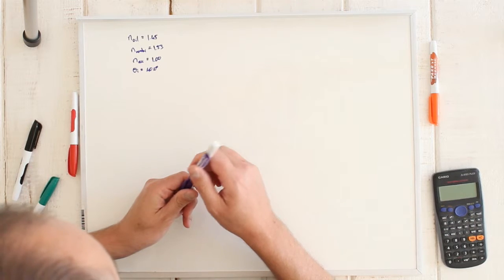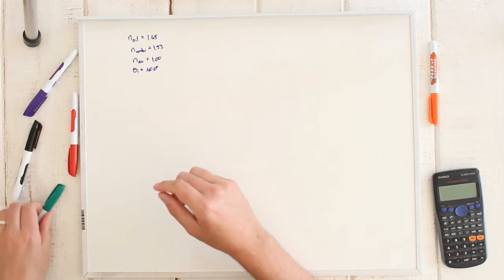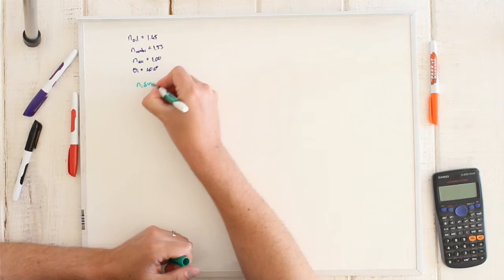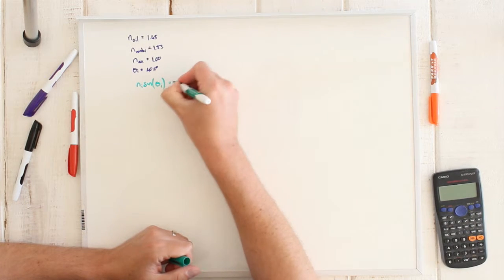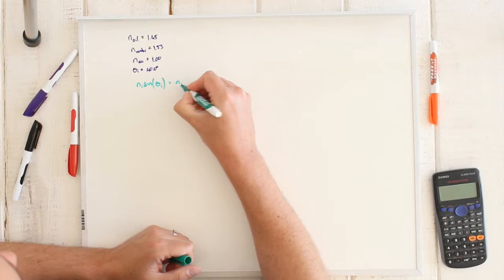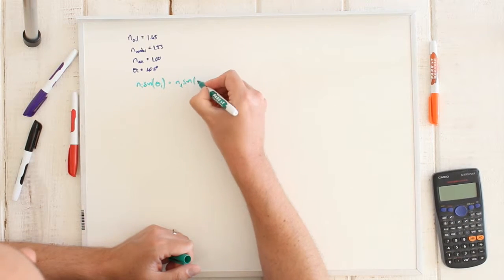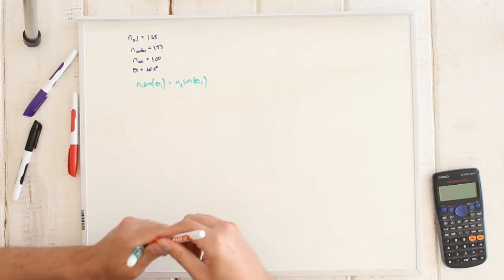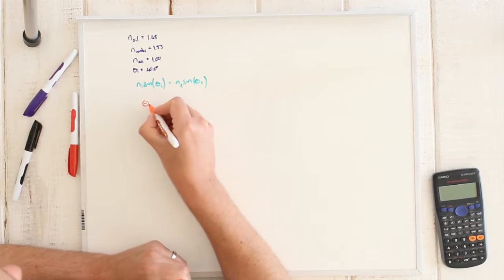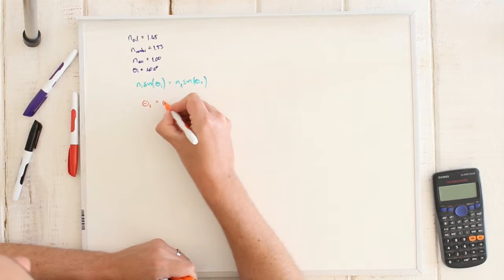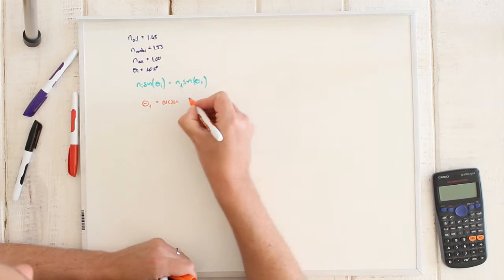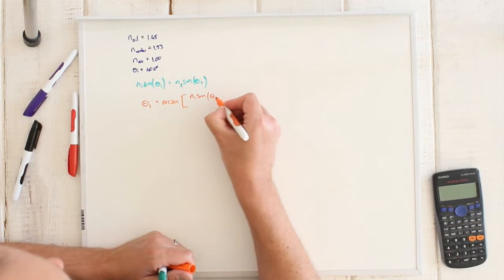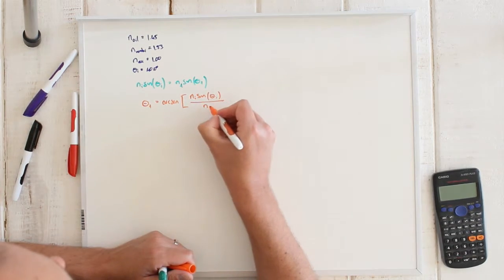Find the angle the ray makes in the water. From Snell's law we know that N_i times the sine of theta_i has got to equal N_refracted times the sine of the refracted angle. What we are interested in is the refracted angle, which equals the arc sine of N_i sine(theta_i) divided by N_t.